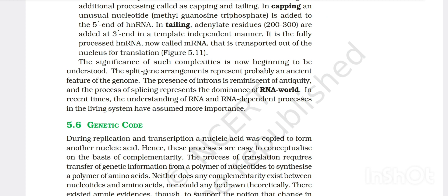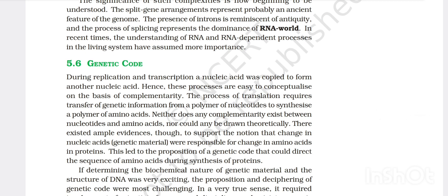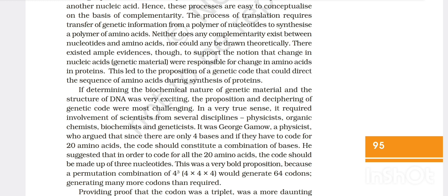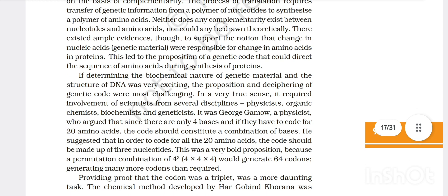In capping, unusual nucleotide that is methyl guanosine triphosphate is added to the 5' end of heterogeneous nuclear RNA. In tailing, adenylate residues are added to 3' end. Fully processed hnRNA now called mRNA is transported out of the nucleus for translation. The splitting gene arrangement represents probably an ancient feature of the genome. The presence of introns is reminiscent of antiquity and the process of splicing represents the dominance of RNA world. Then what is genetic code? During replication and transcription, nucleic acids were copied from other nucleic acids, hence these processes are easy to conceptualize on the basis of complementarity.